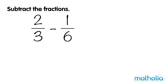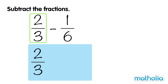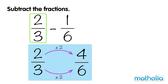Let's find 2 thirds minus 1 sixth. The denominators of these fractions are not the same. To subtract the fractions, we must first make the denominators the same. If we multiply the numerator and the denominator of 2 thirds by 2, we get 4 sixths.